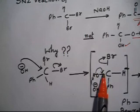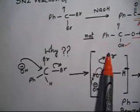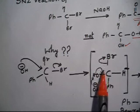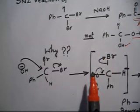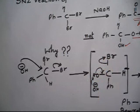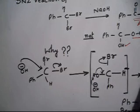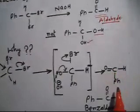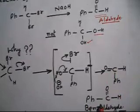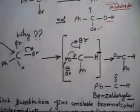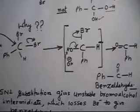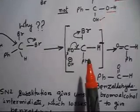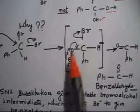Once that H plus is gone, oxygen has a negative charge. There is a bond, and this negative charge pushes Br out. So this negative charge basically pushes Br, forming a double bond between C and O. With H and Ph present, we get PhCHO — benzaldehyde. SN2 substitution gives an unstable bromo alcohol intermediate.